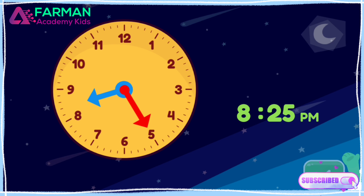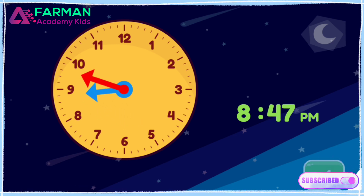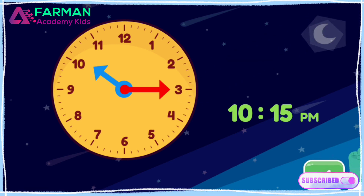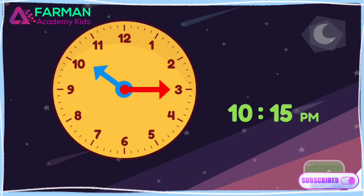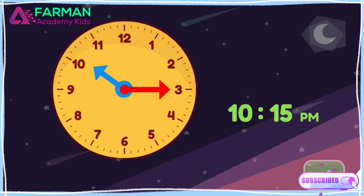Move the minute hand on the round clock to show 10:15 p.m. It's late at night and I'm fast asleep. Now move the minute hand on the round clock to show 12 o'clock a.m. This is also called midnight.